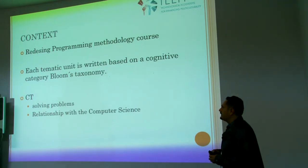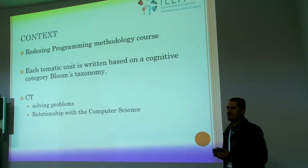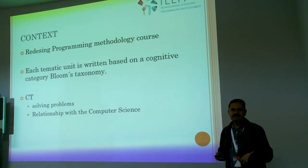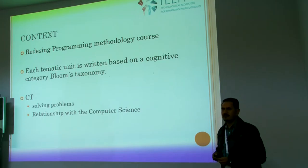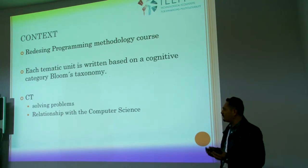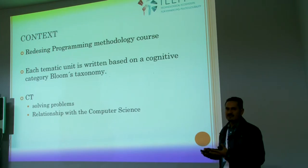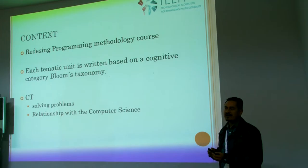The initial proposal of computational thinking involves the concepts of solving problems, the science system, and understanding human behavior. But what are the connections with computer science? With the passage of time, the concept of solving problems continues to be part of the concept, as was the relation with computer science.